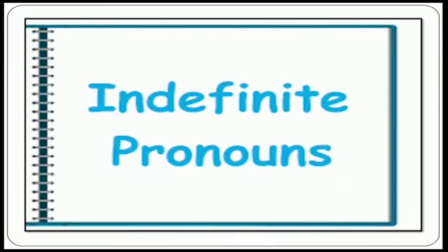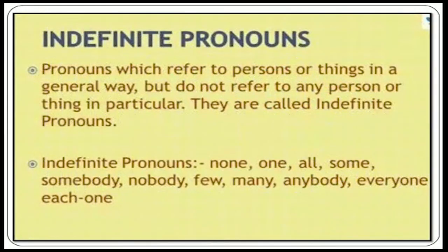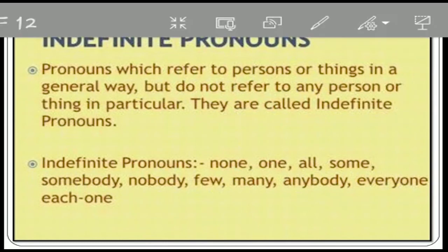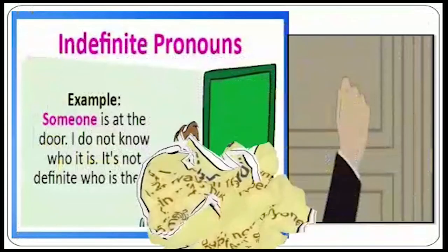Now what do you understand by indefinite pronouns? Pronouns which refer to persons or things in a general way but do not refer to any person or thing in particular are called indefinite pronouns. These are not specific — they are general — like none, one, all, some, somebody. These are indefinite pronouns. Like in the example: 'Someone is at the door. I do not know who it is.' It's not definite who is there, so 'someone' is the indefinite pronoun because we don't know exactly who the person is.